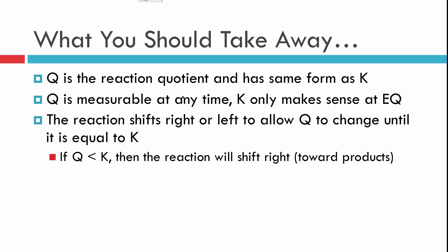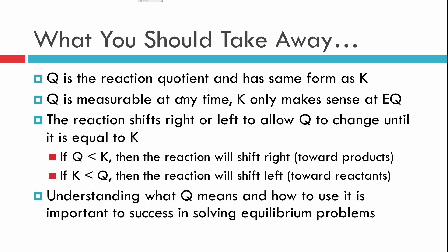And specifically, if Q is less than K, we shift to the right towards products. But if Q is greater than K, then we shift to the left towards reactants. And I can't stress this enough, watching this video a few times to make sure you understand what Q means, how it's used, will be very important, because almost all equilibrium problems require the use of comparing Q to K at some point. Hope this helps you out.